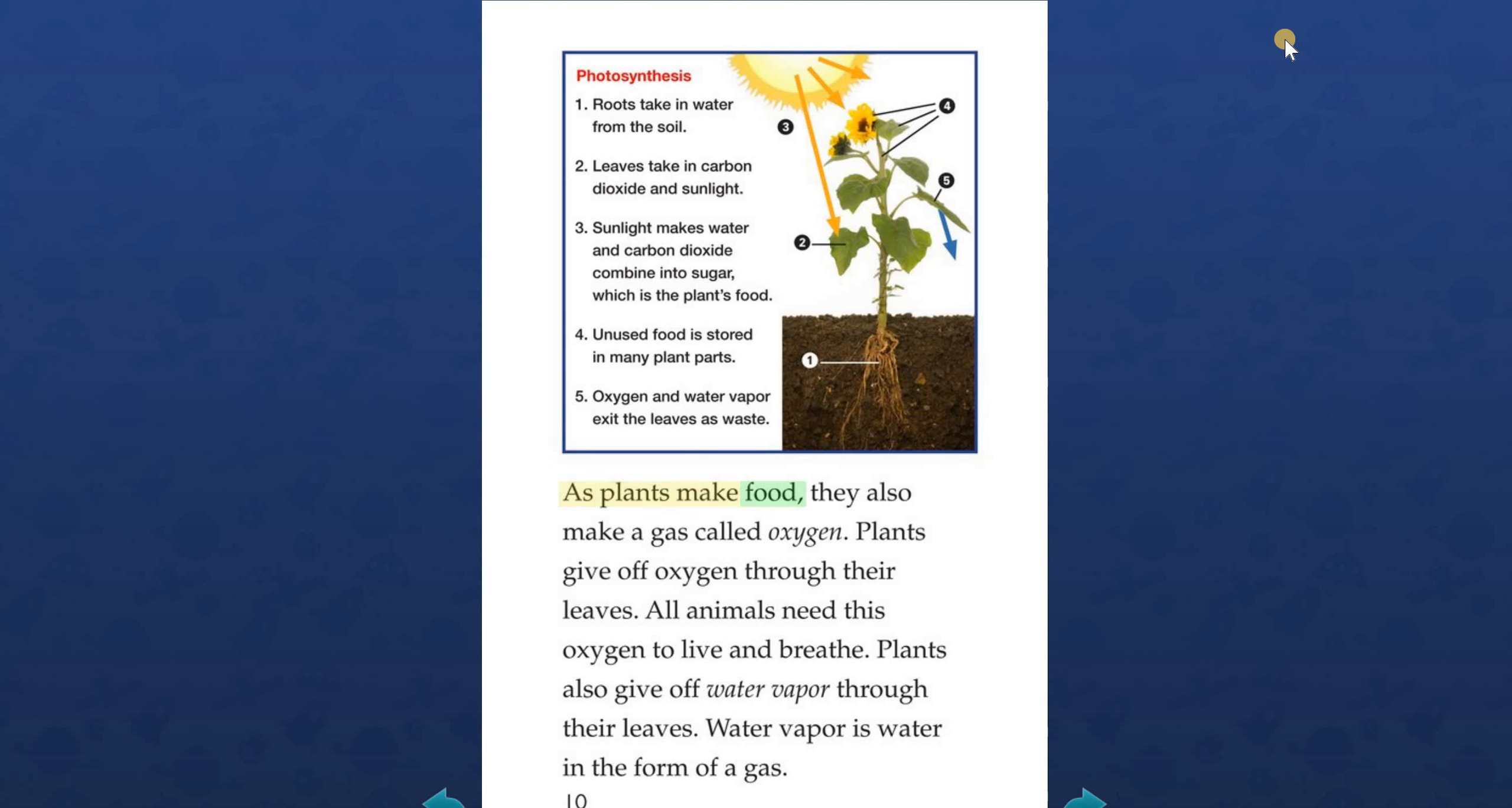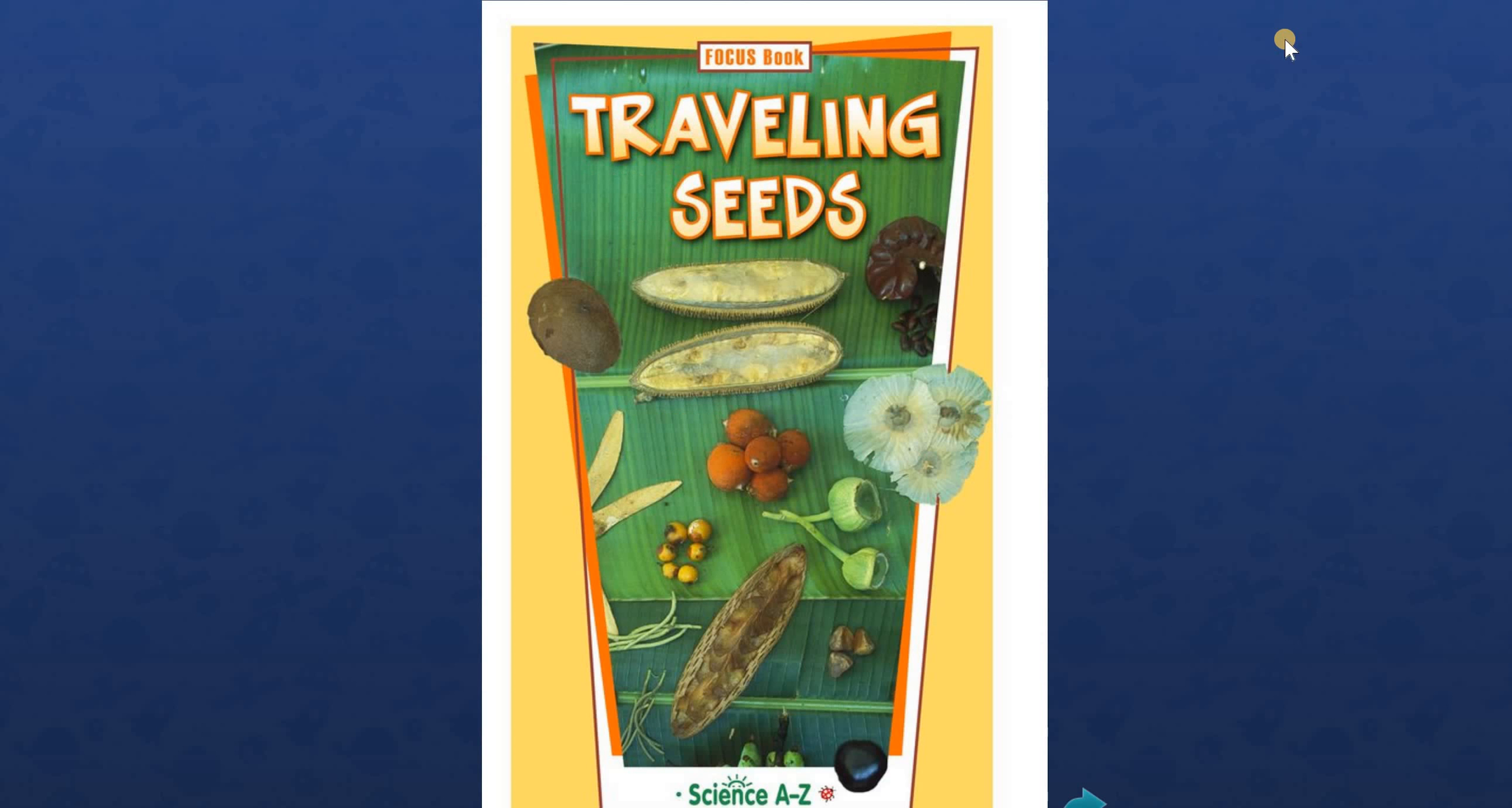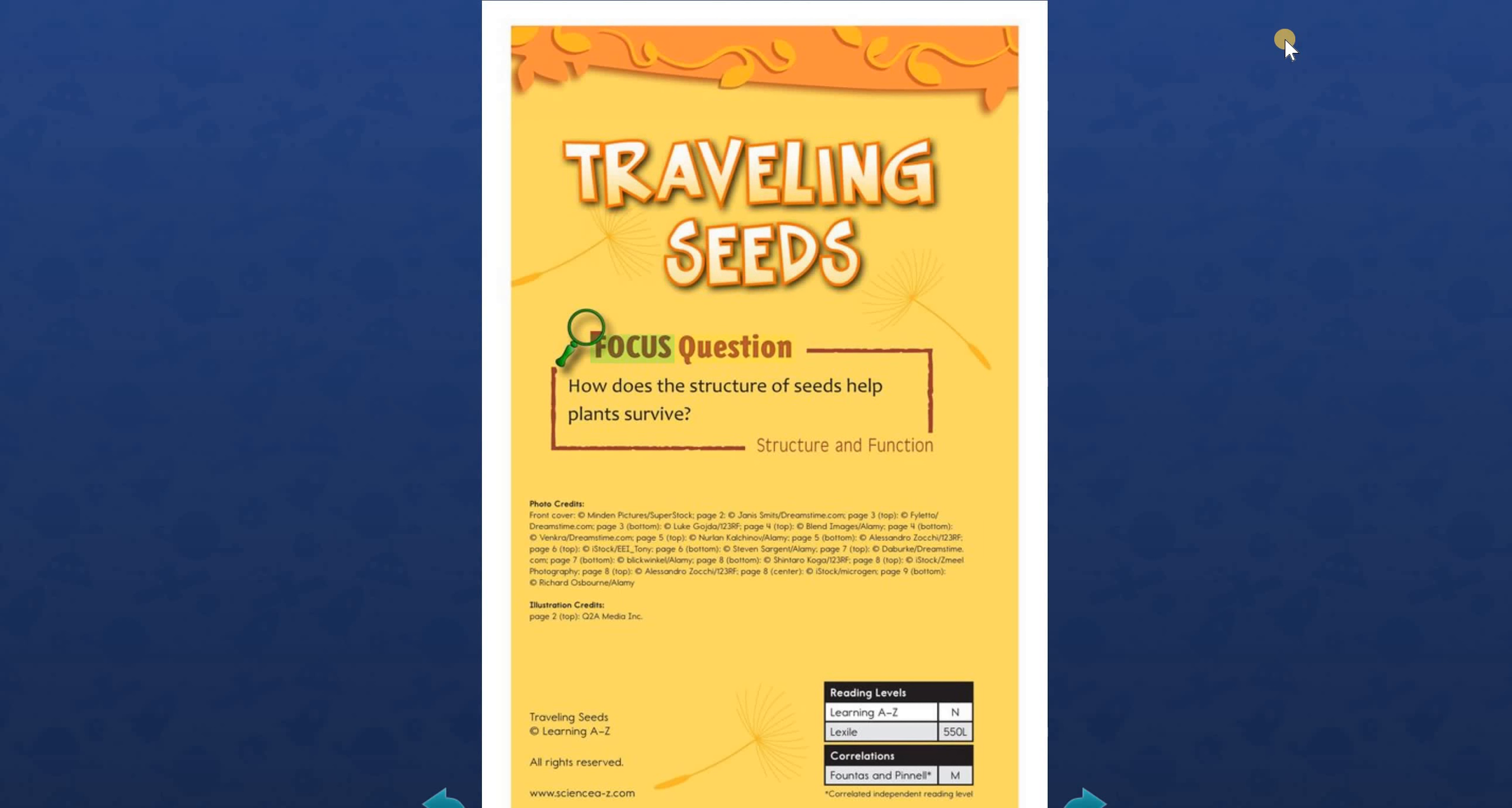As plants make food, they also make a gas called oxygen. Plants give off oxygen through their leaves. All animals need this oxygen to live and breathe. Plants also give off water vapor through their leaves. Water vapor is water in the form of a gas. Photosynthesis: 1. Roots take in water from the soil. 2. Leaves take in carbon dioxide. Leaves take in water.